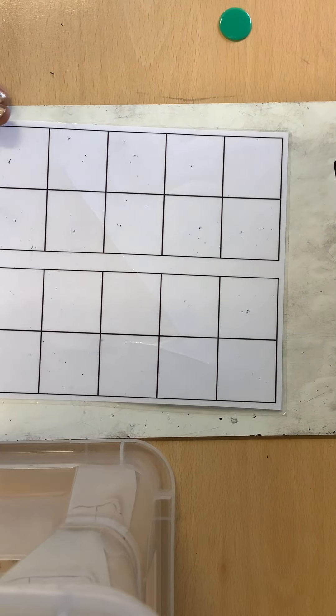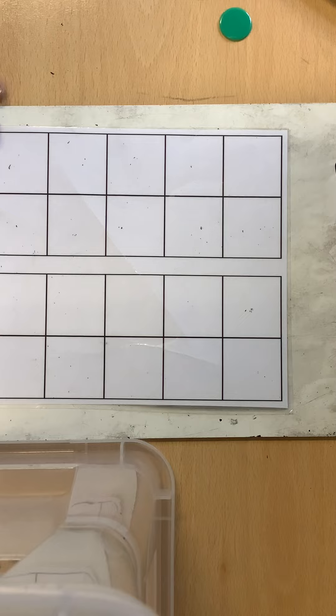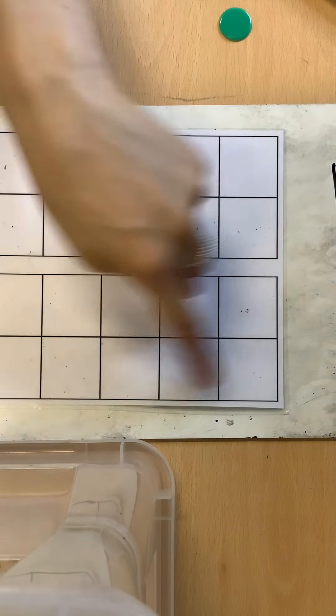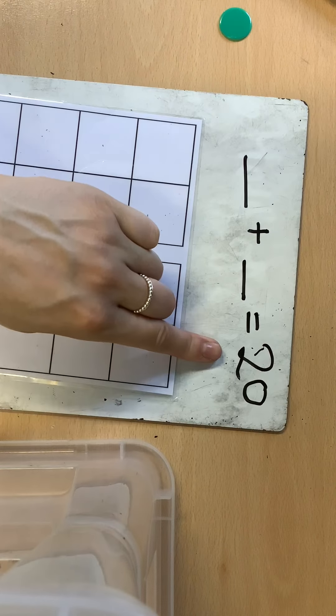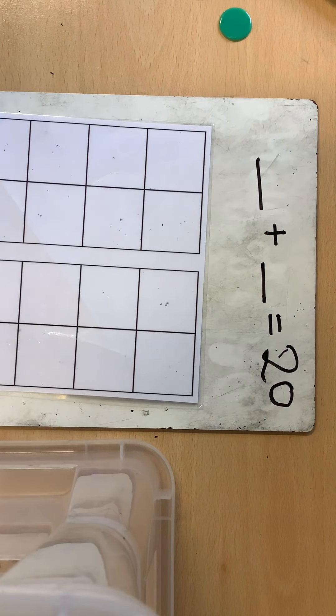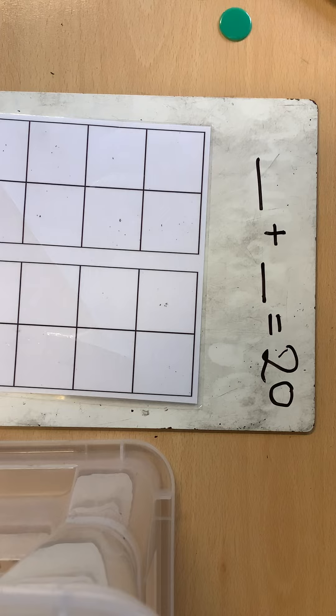I'm going to use my two 10 frames to help me. I've got one 10 here, another 10 here, 10 and 10, 20. So that means if both of the 10 frames are full I have made 20.